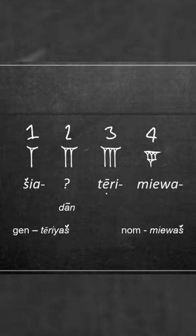So if we wanted to put three in the genitive it would be 'terias', and if we wanted to put four in the nominative it would be 'miauas'.